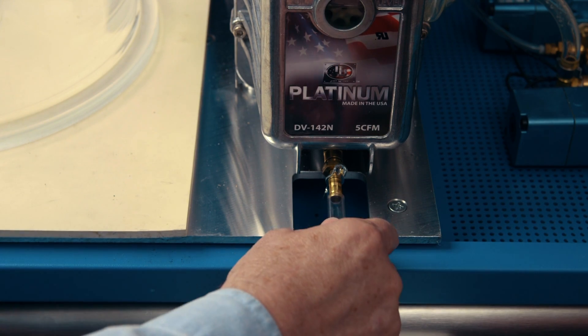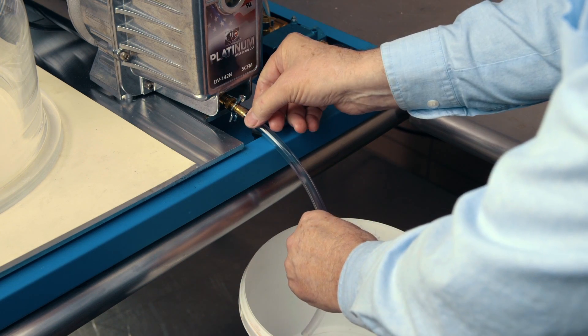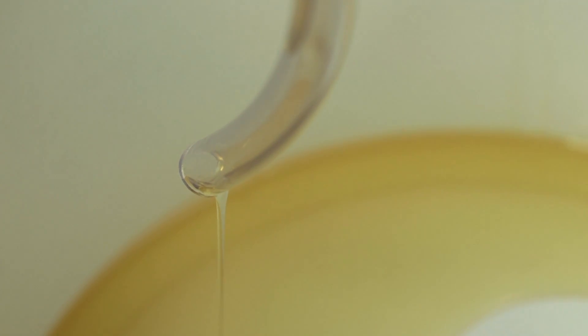Attach the drain hose to the drain valve at the bottom of the pump, then open the valve to allow the oil to empty into the container. Then close the valve.